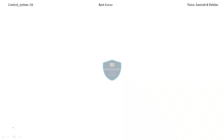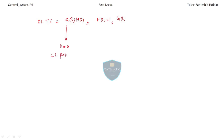Welcome back to Getmatic Educations. In lecture number 15 we started the root locus. We discussed how to proceed for closed loop system stability. In root locus we consider the open loop transfer function G(s)H(s), and if H(s) is 1 then we use G(s) directly. We saw that for k=0 the closed loop poles equal the open loop poles, and for k=infinity the closed loop poles equal the open loop zeros.